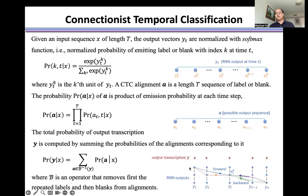For example, we use the forward-backward algorithm to calculate it, where B is the operator that removes first the repeated labels and then blanks from alignment.